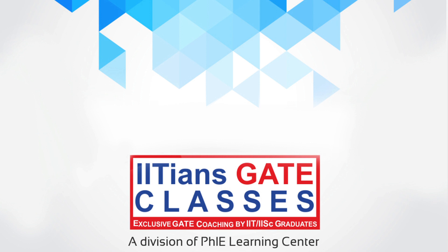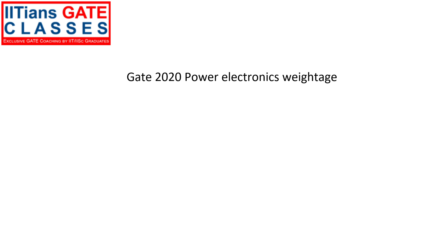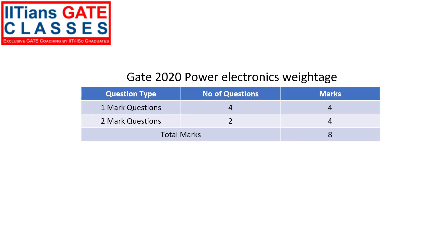Hello everyone, myself Shankar. In this lecture, we will be discussing solutions for GATE 2020 power electronics questions. First of all, let's see the weightage. In GATE 2020, power electronics weightage is eight marks, out of which we have four one-mark questions and two two-mark questions, so in total we have eight marks. Next, we will start with the solutions.